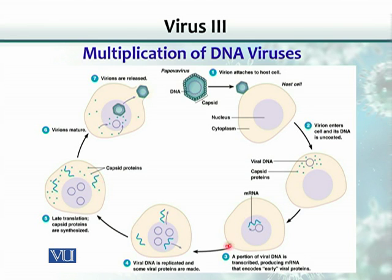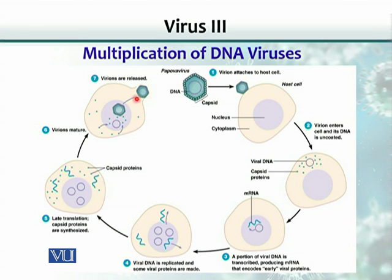That messenger RNA goes through an early phase, producing early proteins that are basically enzymes for replication of the viral DNA. Then there is a late phase where messenger RNA is made to produce viral capsid proteins. When the nucleic acid is replicated and the capsids are available, those are assembled into full virion particles and released into the medium.